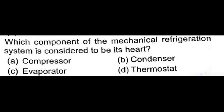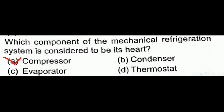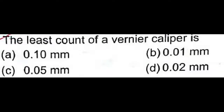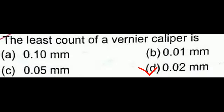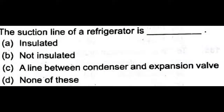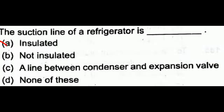Which component of a mechanical refrigerant system is considered its heart? It is the compressor, which pumps the refrigerant throughout the system. The least count of a vernier caliper is always 0.02 mm — remember this, it may be an important question from an exam point of view.